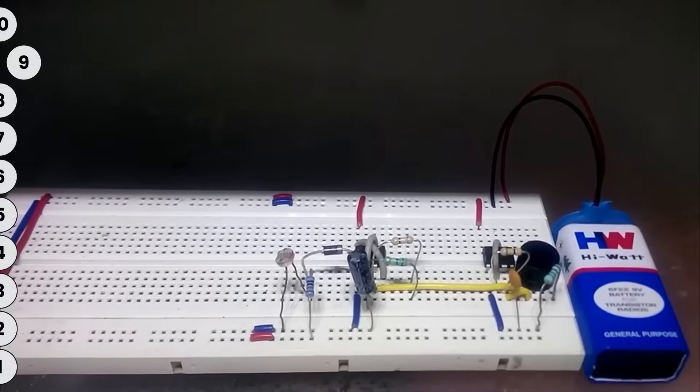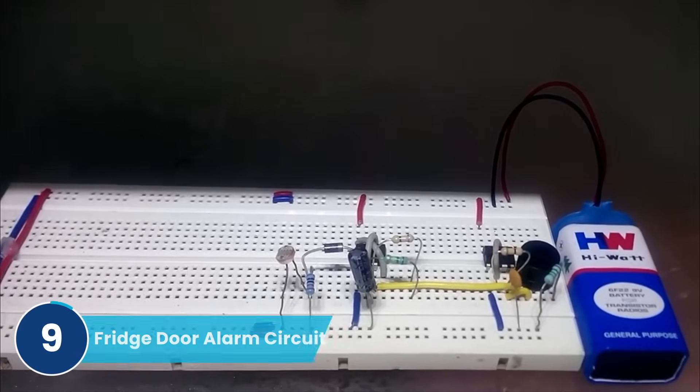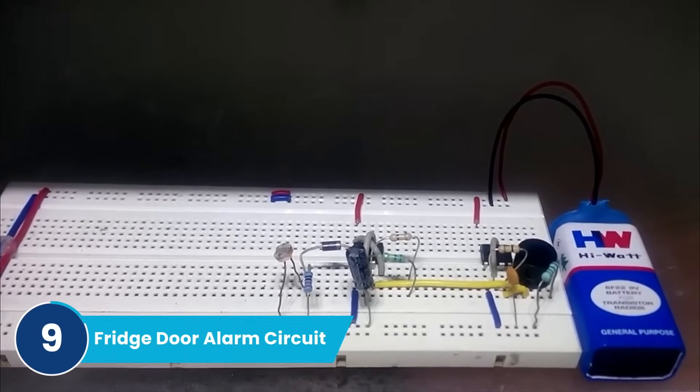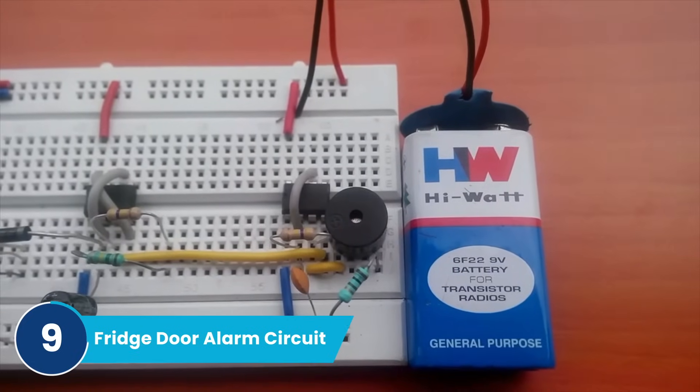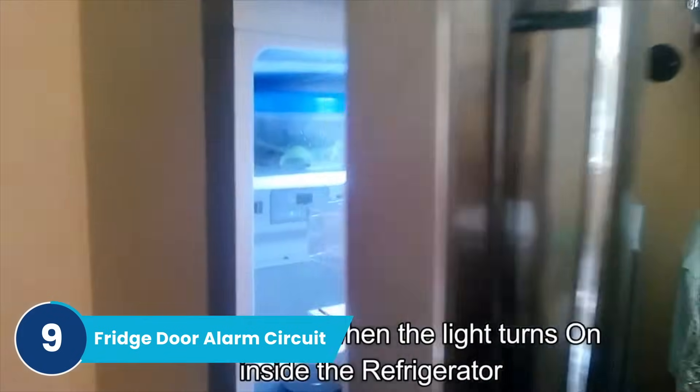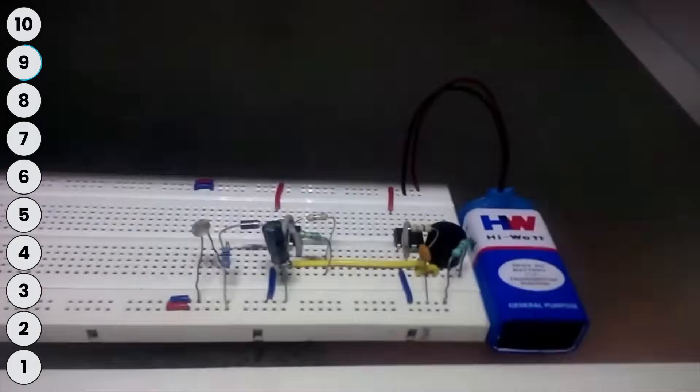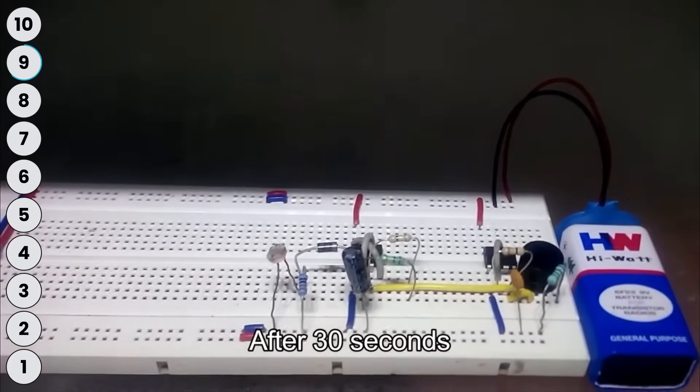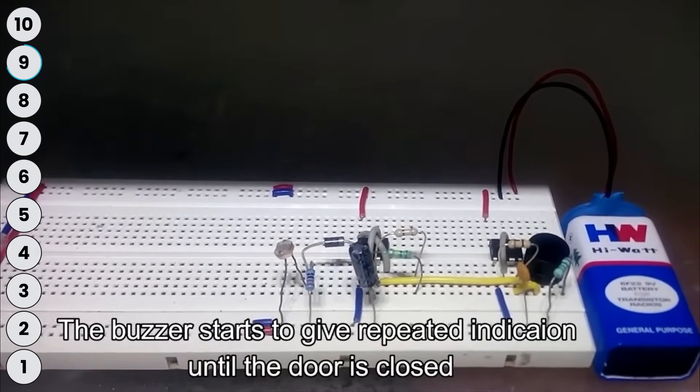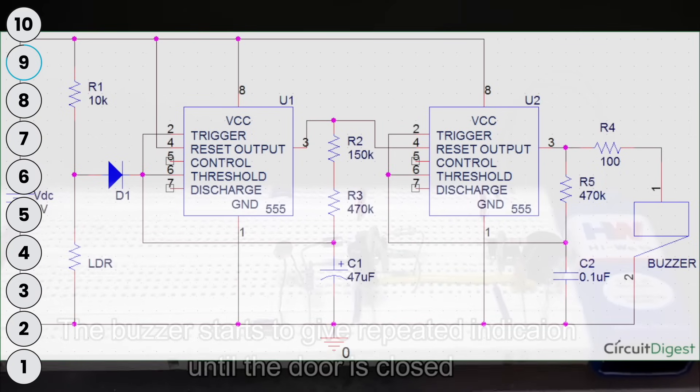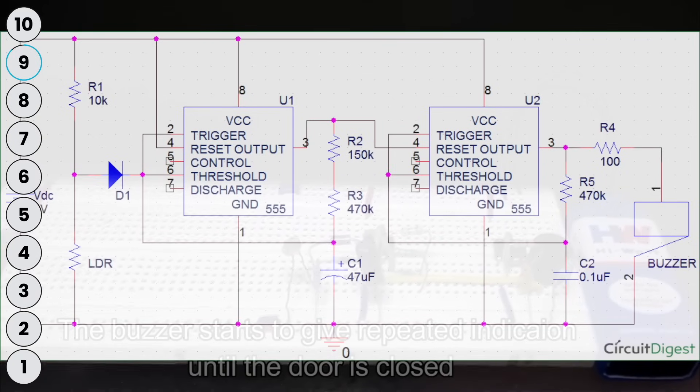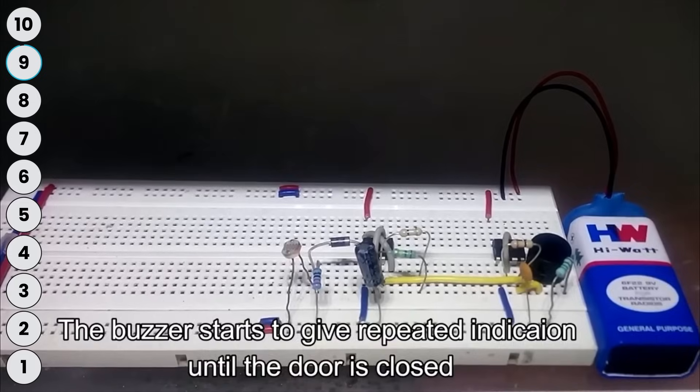Coming on at number nine is a fridge door alarm circuit. This is a very simple yet useful circuit. When you open the fridge, it automatically starts a timer, and if you don't close it soon, it will give you an alarm saying that you're wasting energy by keeping your fridge door open. It is also easy to build with just two 555 timers, a buzzer, and a 9-volt battery.